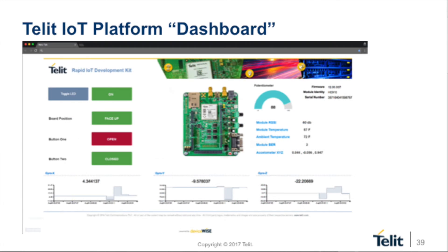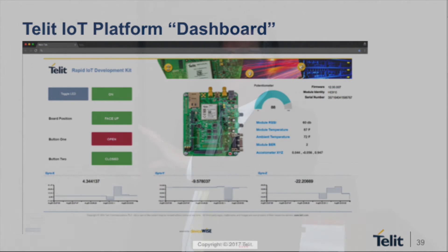So basically just providing an end-to-end scenario of how to put it together. It's nice that the potentiometer can go from zero to 1024 down on the board, but how do I present that as a gauge on the cloud? So here the solution end-to-end has kind of been put in place for you, so you can focus on how do I change it for my solution versus how do I put all these pieces together to do what I need to do.